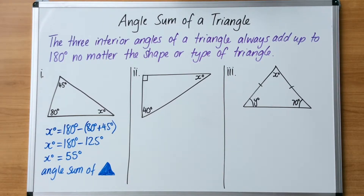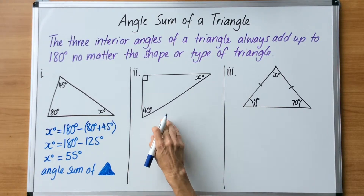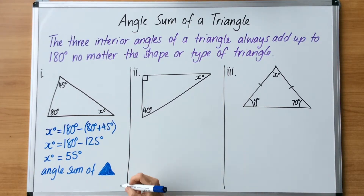Every time you find a missing angle, no matter what kind of quadrilateral, triangle, or parallel line problem you're doing, you have to tell the teacher, the exam, or the assignment what angle it is and how you figured it out. Let's do the second one now.